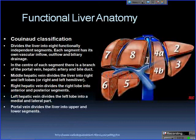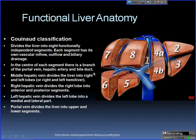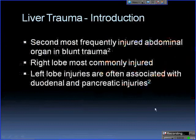This is the Couinaud classification. The liver is divided into eight functional segments, and each segment has its own vascular inflow, outflow, and biliary drainage. In the center of each segment you have a branch of the portal vein, hepatic artery, and bile duct. The middle hepatic vein divides the liver into right and left functional lobes. The right hepatic vein divides the right lobe into anterior (segments 8 and 5) and posterior (segments 7 and 6). The left hepatic vein divides into medial (segment 4A and 4B) and lateral (segments 2 and 3). The portal vein divides into superior and inferior segments.